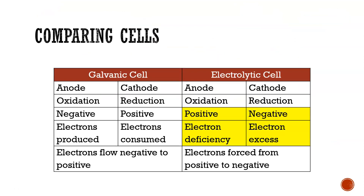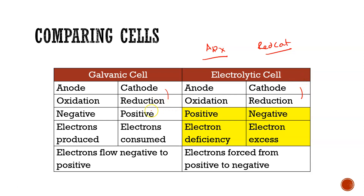Comparing both cells: both have anodes and cathodes, and oxidation and reduction occur at the corresponding electrodes. Remember 'an ox' — oxidation at the anode — and 'red cat' — reduction at the cathode. This holds whether it's electrolytic or galvanic. The key difference is the polarity of the electrodes: in the electrolytic cell the anode swaps from negative to positive and the cathode from positive to negative, determined by the power pack.